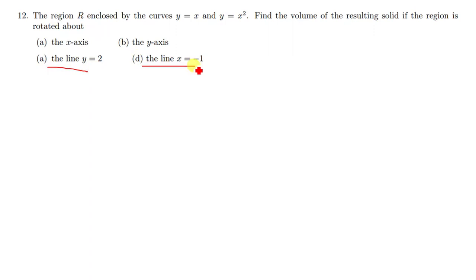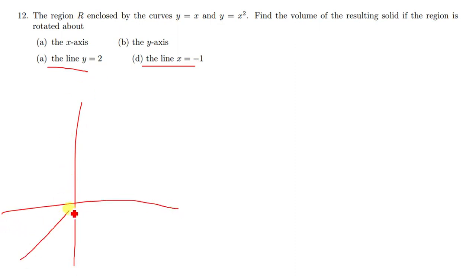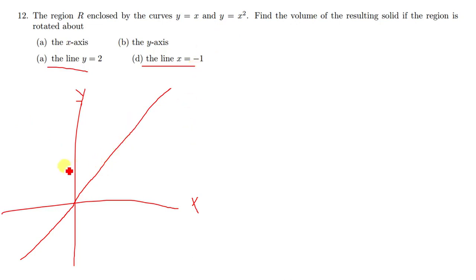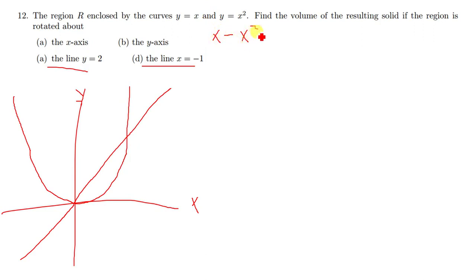To solve this, you first sketch the two curves. The line y equals x moves diagonally, and the curve y equals x squared is a parabola with minimum at (0, 0). Solving simultaneously gives x minus x squared equals zero, meaning x(1 minus x) equals zero, so x equals 0 or x equals 1. The limits are 0 and 1, and the region in question is between these two curves.